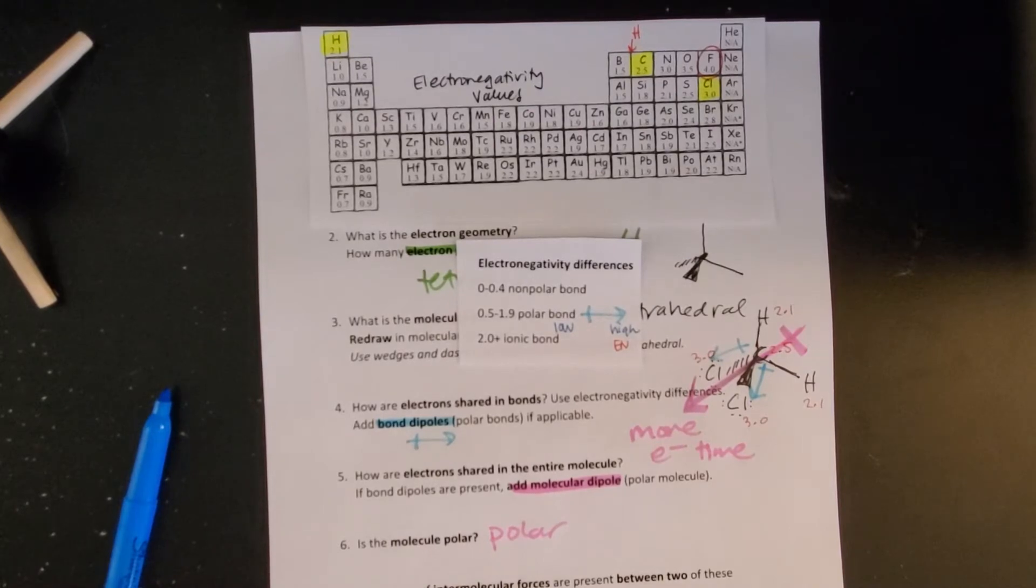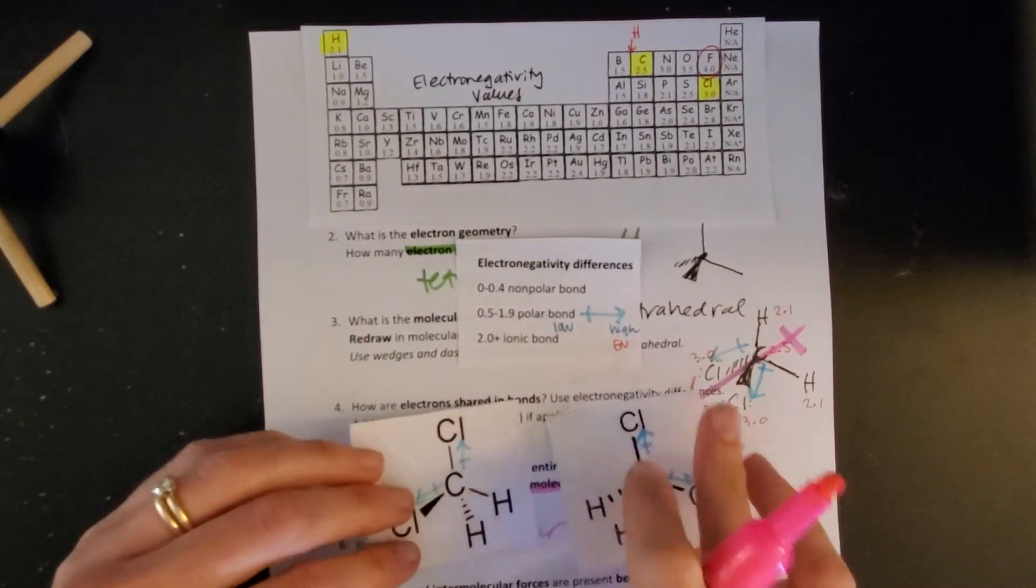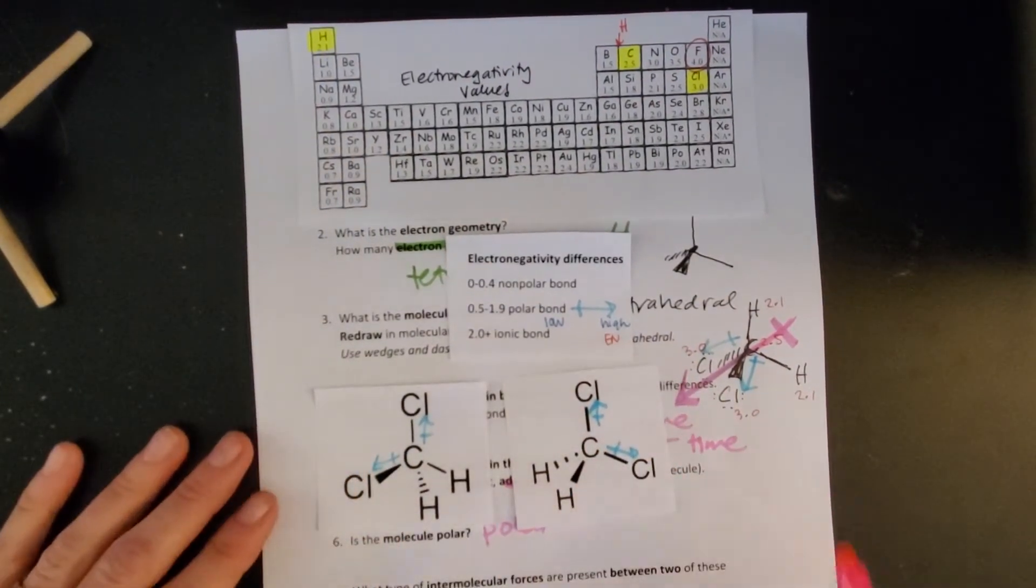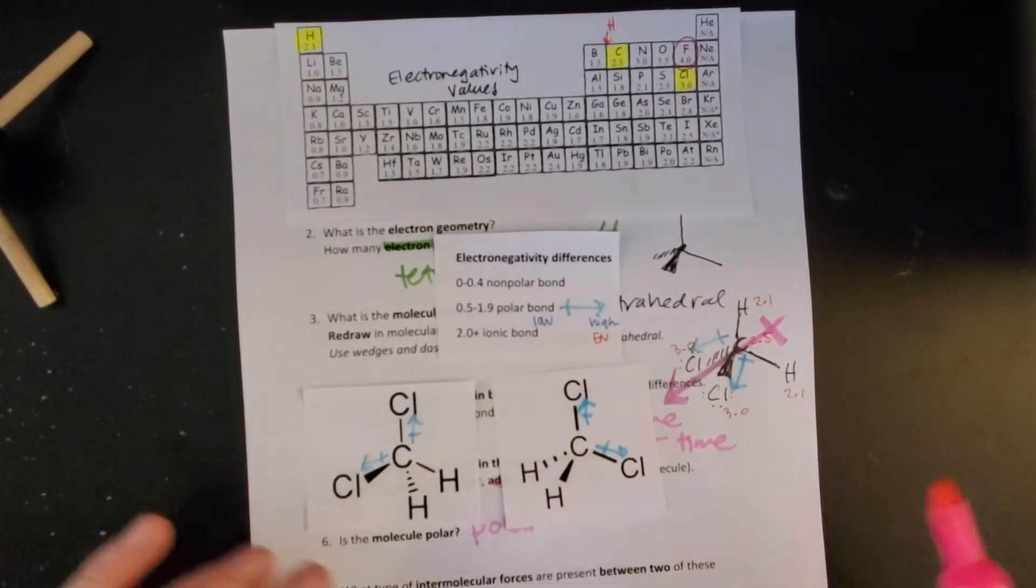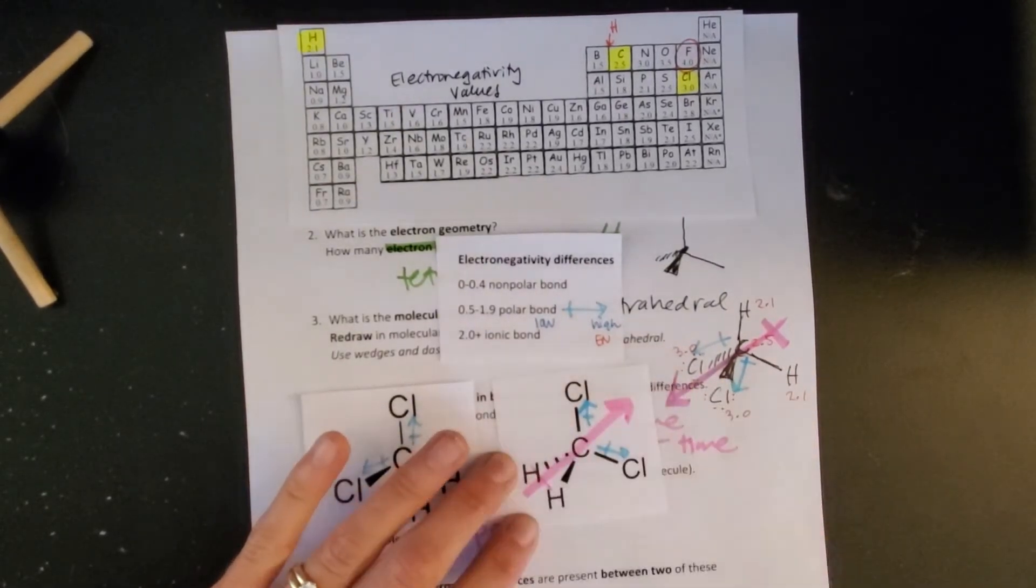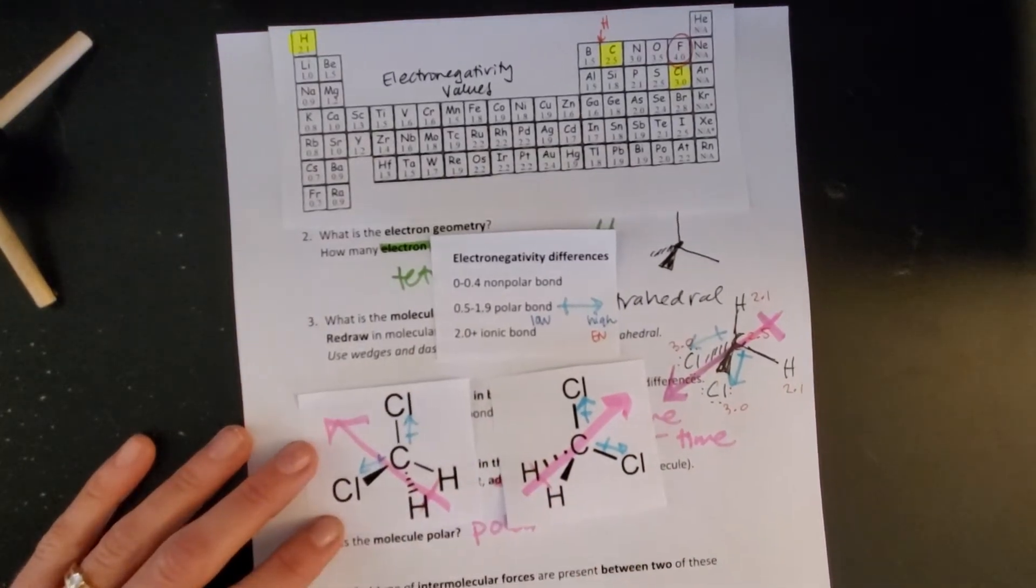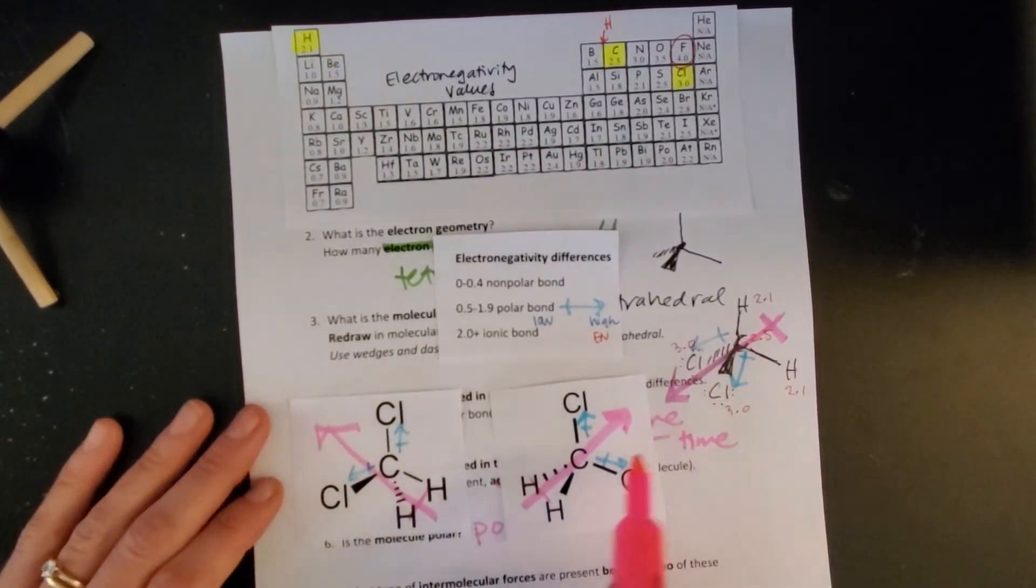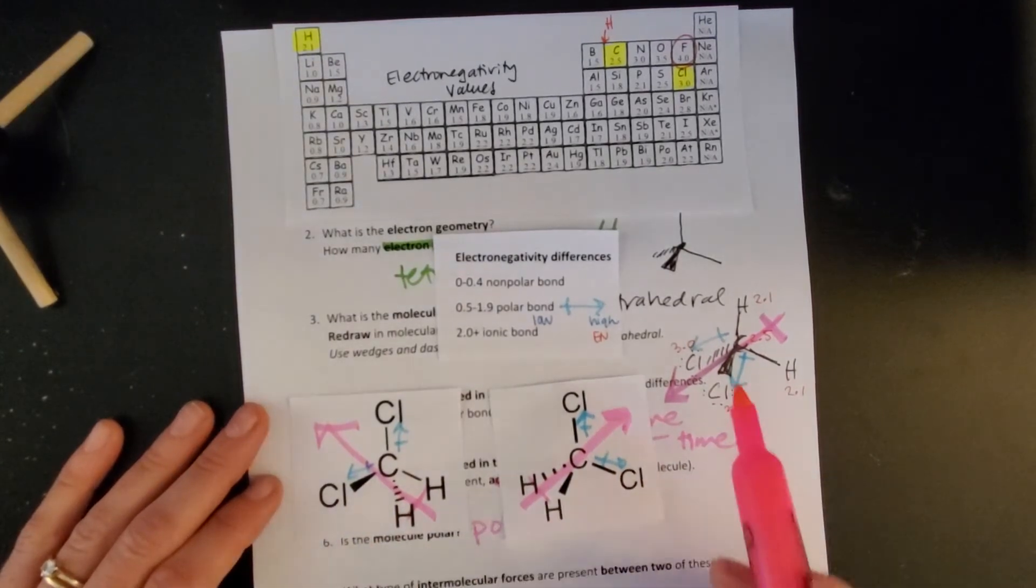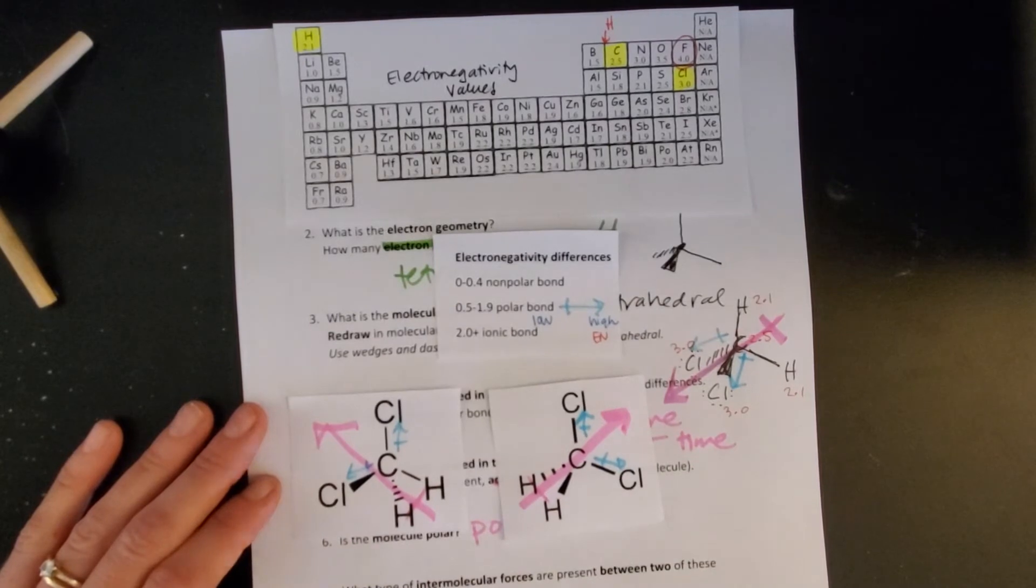Now whatever way you drew those molecules, remember I said maybe your chlorines are together in different places, here's my chlorines with bond dipoles this would be my molecular dipole. Here's chlorines up here I still have a molecular dipole. So no matter how you draw your molecule if you do your blue bond dipoles right you will always find a molecular dipole and come up with the same answer that this is a polar molecule.